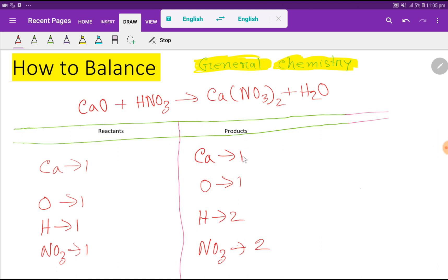Look: calcium one, one, so calcium is already balanced. Oxygen one, one, so oxygen is already balanced. Hydrogen here one, but here two.